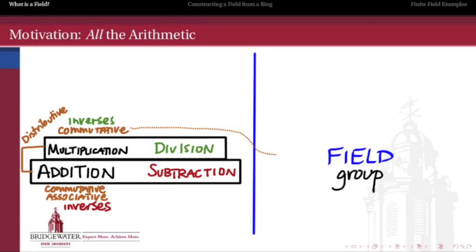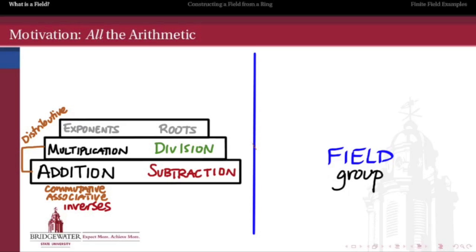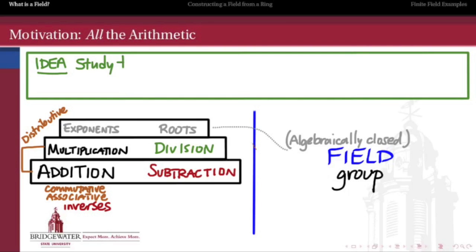In a field, we have all four operations: addition, subtraction, multiplication, and division. Multiplication and addition are commutative, multiplication distributes over addition, and we can divide by everything except zero. In the real numbers, we can go even higher than this and build exponentiation and roots on top of multiplication and division. If we're able to do that in our field, then our field is going to be something special — we'll call it algebraically closed. But for now, what we really need in a field is multiplication, division, addition, and subtraction — everything except dividing by zero.